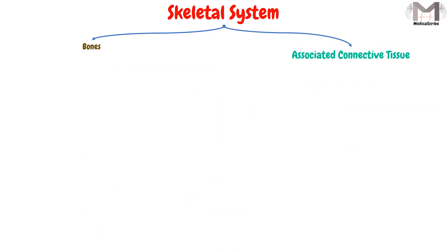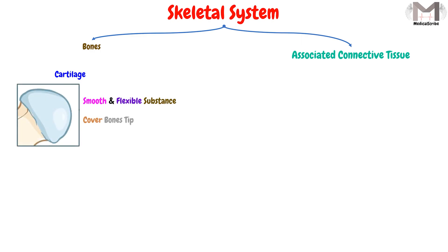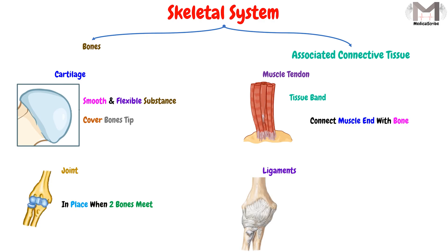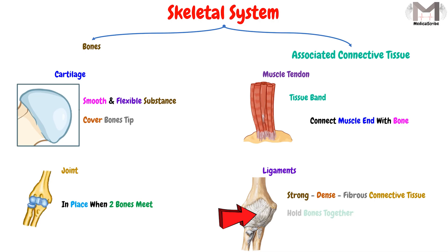The second main component is the associated connective tissue, which involves the following structures. The cartilage, which is a smooth and flexible substance that covers the bone's tip — more flexible than bone but stiffer than muscle. The second structure is the joint, which occurs where two bones meet together. The third structure is the muscle tendon, a band of tissue that connects the muscle end with the bone. Finally, we have the ligaments, which are bands of dense fibrous connective tissue that hold the bones together and are key to joint function.